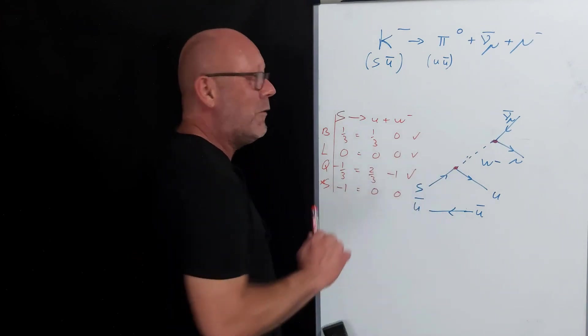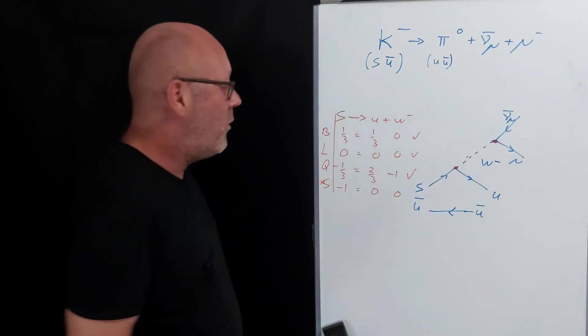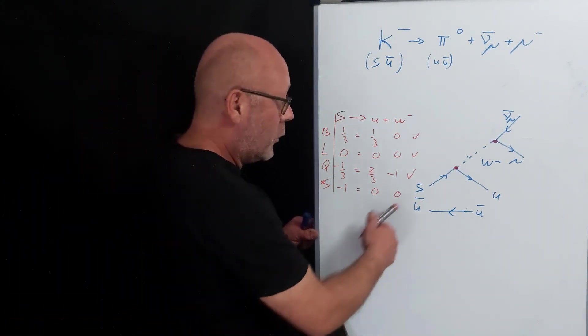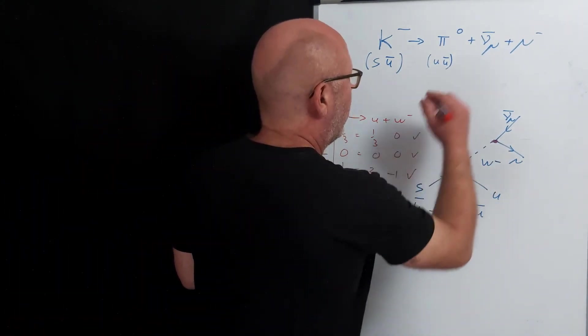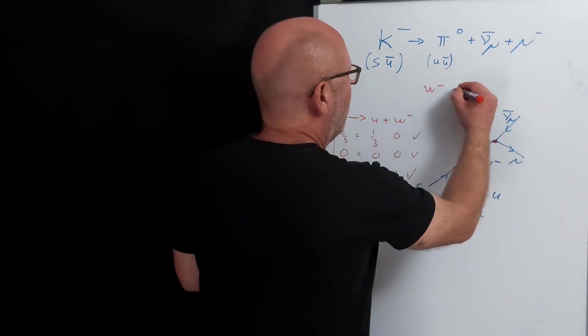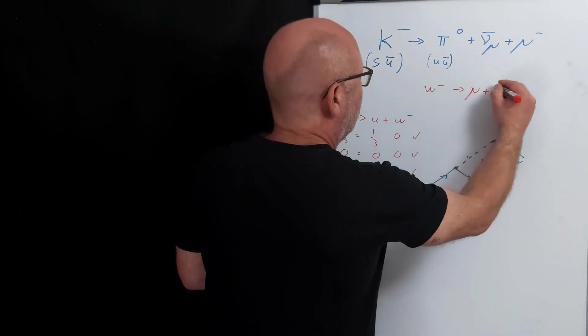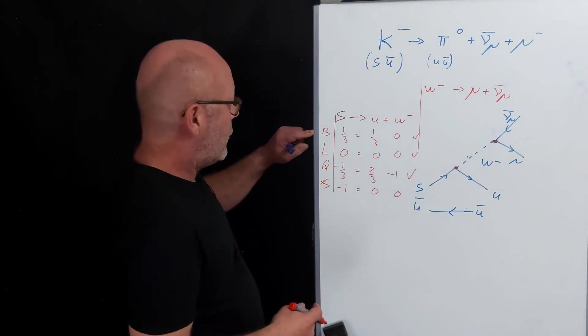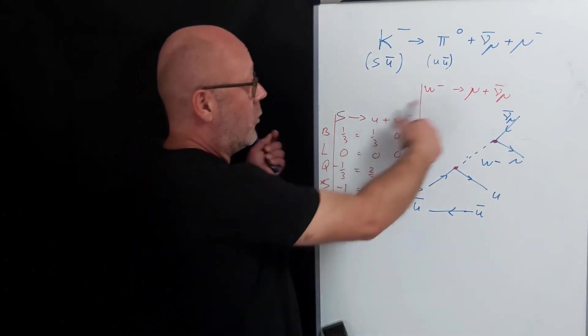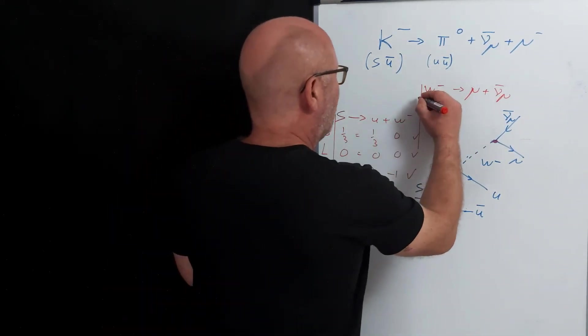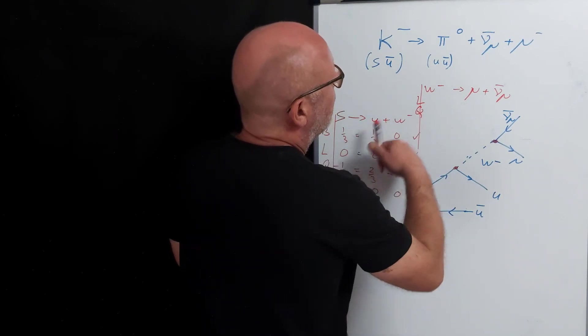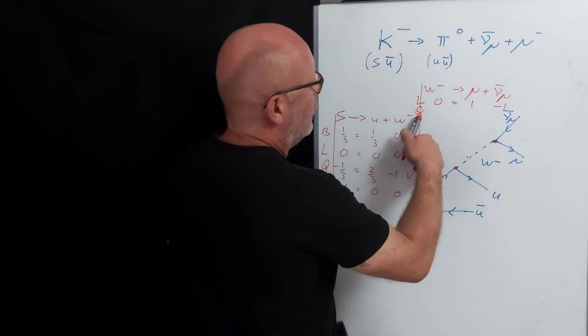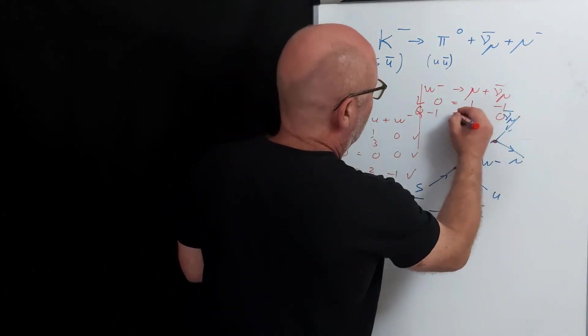So we're still good. Let's check this one. A W- becomes a muon plus an anti-neutrino of the muon. Let's check the numbers. I'm not going to do baryon number and strangeness because there's no quarks involved anyway. So I'll just do the lepton number and the charge. Lepton number is zero, one, minus one. It works. Charge, minus one, minus one, zero. It works.